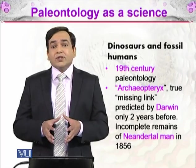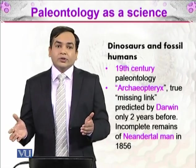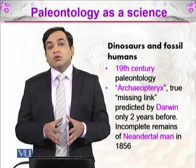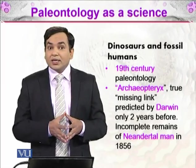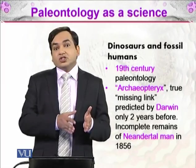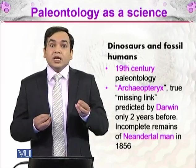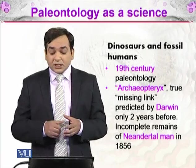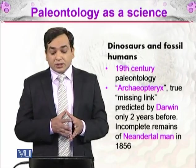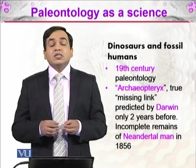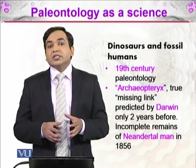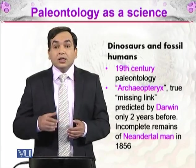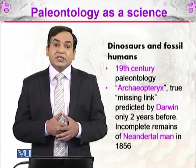When Darwin gave the idea that one species evolves into another, scientists speculated that today's birds evolved from earlier dinosaurs. There must be an organism in between those two species. Scientists found such an organism, which we call Archaeopteryx. Archaeopteryx contained characteristics of both reptiles and birds, and it was predicted by Darwin two years before it was discovered in Germany.